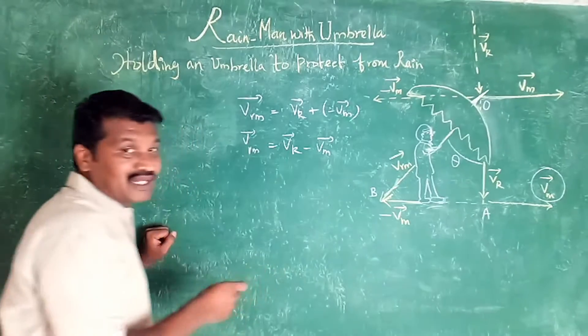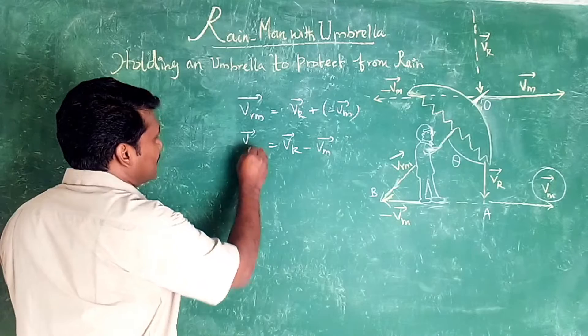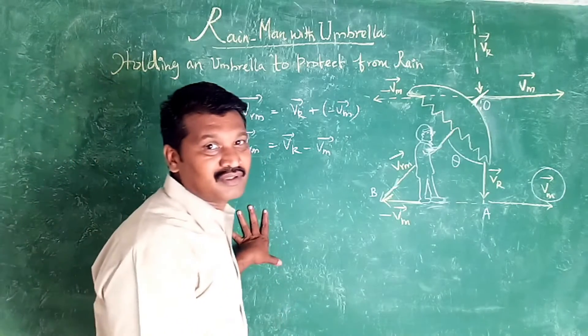Now there is the velocity. This is the speed of rain. This is the angle here.